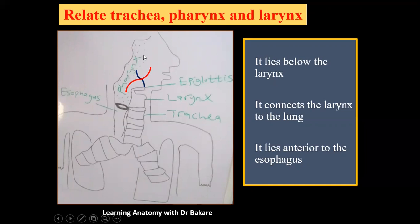The nasopharynx is the part of the pharynx located behind the nasal cavity, while the oropharynx is located behind the oral cavity. The laryngopharynx is the region of the pharynx located behind the larynx. The pharynx extends from the nasal cavity downward, and the larynx is located at the junction with the oropharynx.